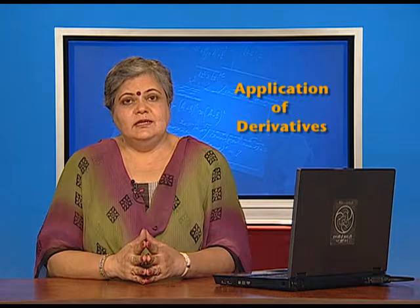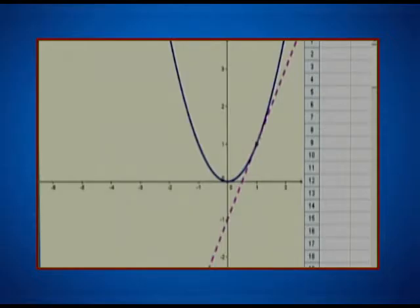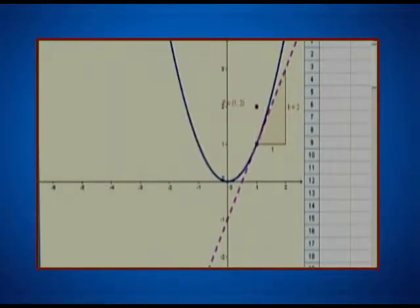Let us take a look at it through an applet. Here we have a graph of the quadratic function. Let us take a point A on this graph and construct a tangent at point A, and also measure the slope of this tangent. In this position the slope of the tangent is represented by the number B, which is taking the value 2. Let us also construct a point P which has the same x-coordinate as point A and the slope B as its y-coordinate.